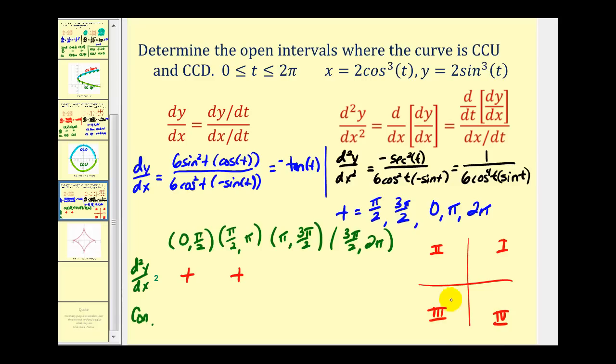Now in the third quadrant both sine and cosine are negative. So the sine of t will be negative. Cosine of t will also be negative but we're raising it to the fourth power, which makes it positive. So this fraction would be negative.